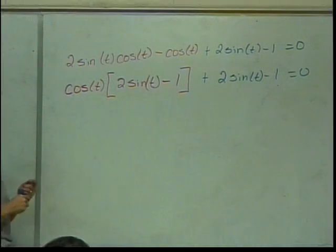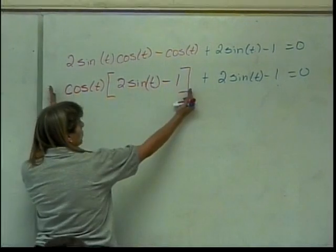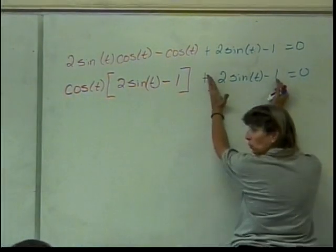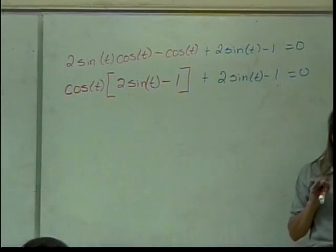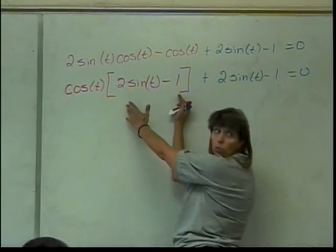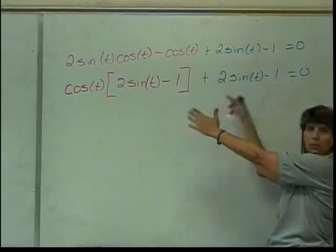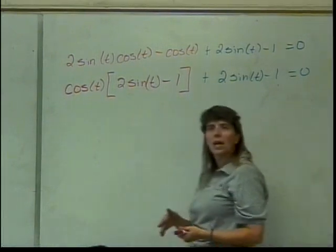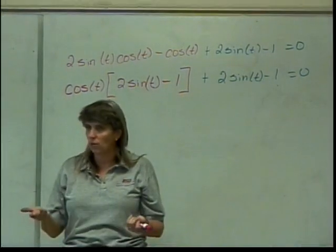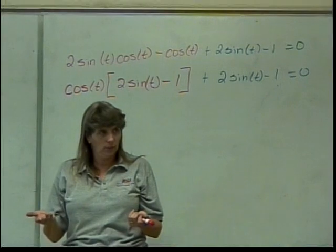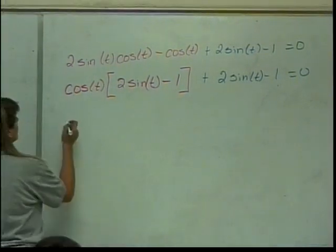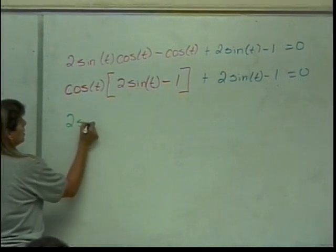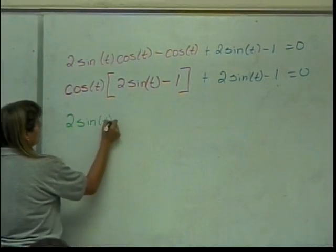Now I have what you can think of as two parts to my equation — the part in red and the part in blue. Do they have something in common? The 2 sine of t minus 1 is in both pieces, the red piece and the blue piece. So that means I can factor it out. We'll have 2 sine of t minus 1.